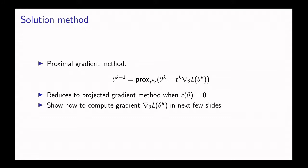When r is just the identically zero function, this simply reduces to the projected gradient method because the prox is just the projection onto the set theta. But in general, by using a proximal method this allows us to use non-smooth r. You might be asking yourself, how do we compute the derivative of the prediction error with respect to the parameters? I'll describe how we do that in the next few slides, and that's pretty crucial to our method.